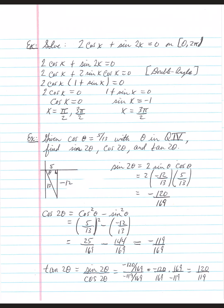Now let's combine sum/difference identities with equation solving. Solve 2cos(x) + sin(2x) = 0 for solutions within one rotation on the unit circle. I notice sin(2x) is a double angle — go to your double angle identities. Sine(2x) expands into 2·sine(x)·cosine(x), so we have 2cos(x) + 2sin(x)cos(x).